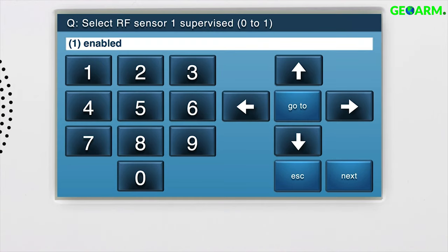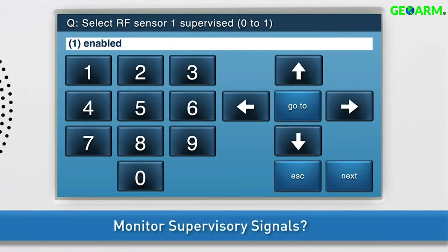Next, decide whether or not you want the panel to monitor supervisory signals of the thin door window contact, such as low battery, tamper, and more. Select 1 enabled to activate this feature. Press the down arrow to go to the next sub-question.